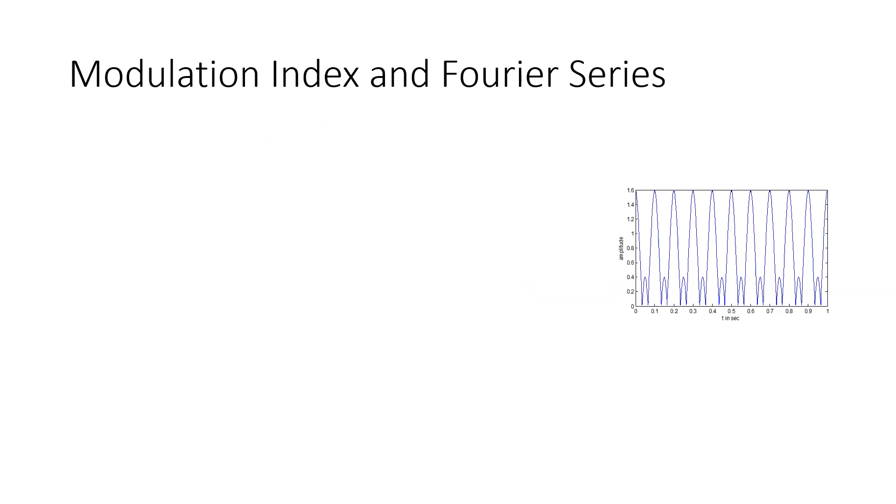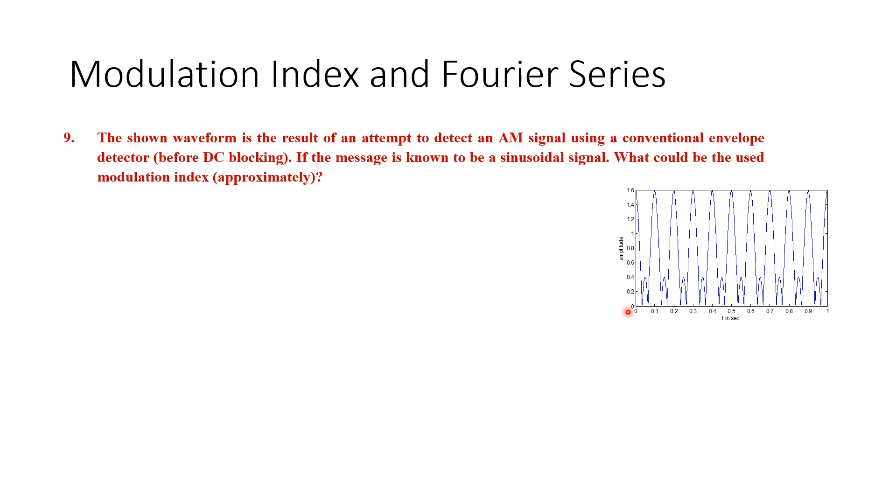Now for question number nine, it's related to modulation index. For the figure shown, I hope that you can see the numbers. The question states: the shown waveform is the result of an attempt to detect an AM signal at the receiver side using a conventional envelope detector before DC blocking. If the message is known to be sinusoidal, it's supposed to be sinusoidal.